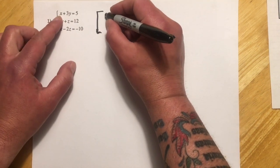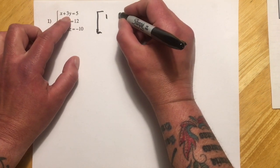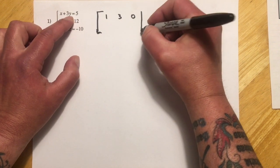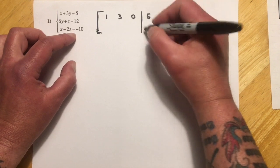So we have one x right here, so that'd be a one in the first slot. A 3y, so three for that. We don't have a z term so that's a zero, and then we draw a line for the equals and then five on the other side. And this is the augmented part.